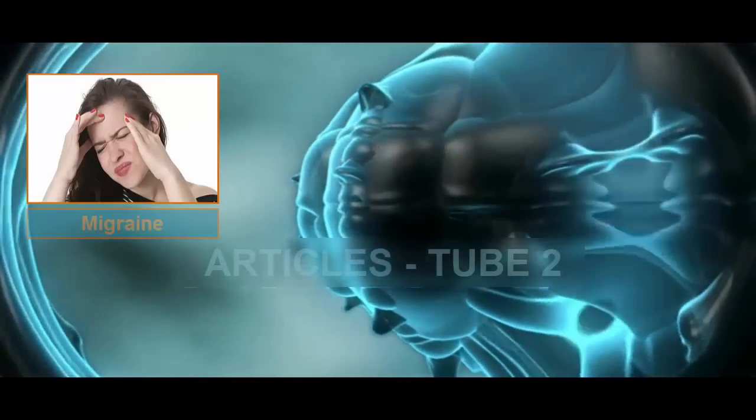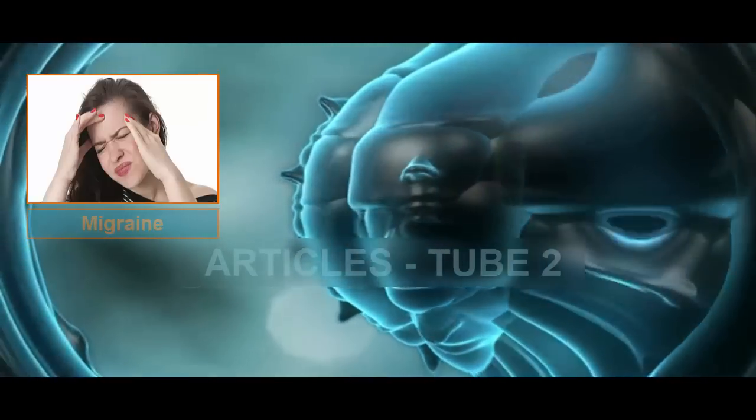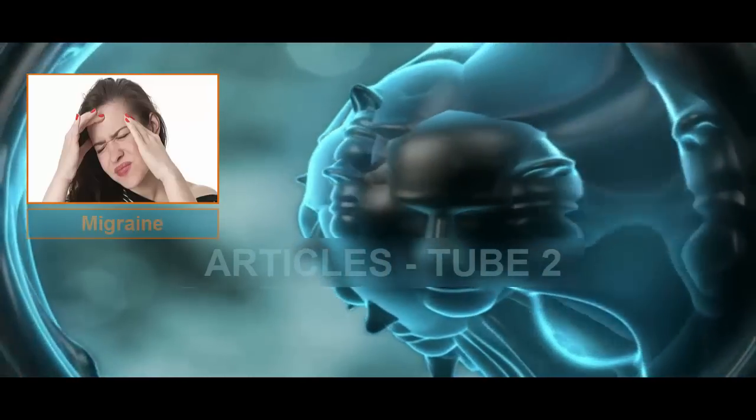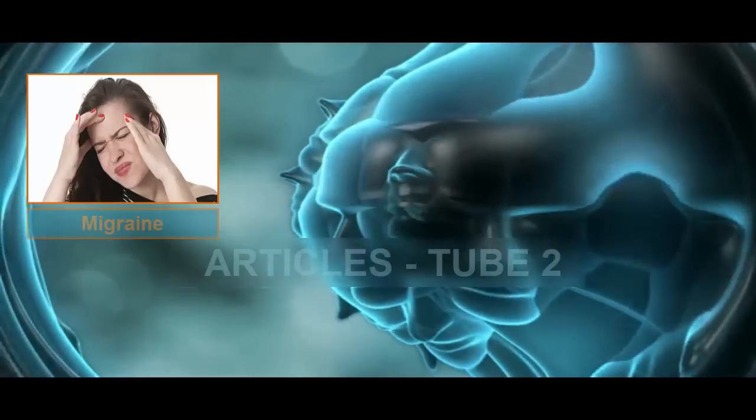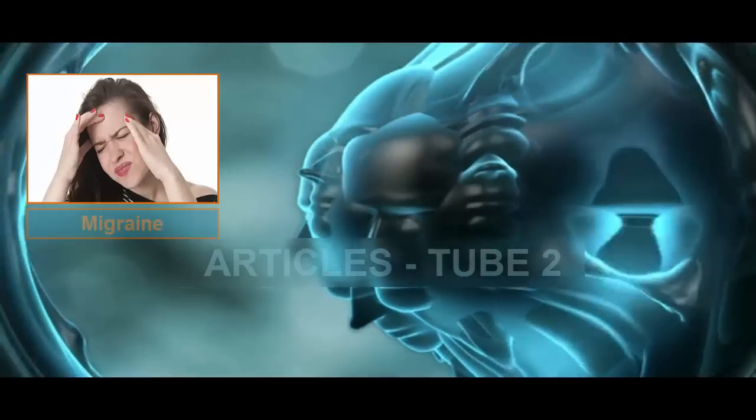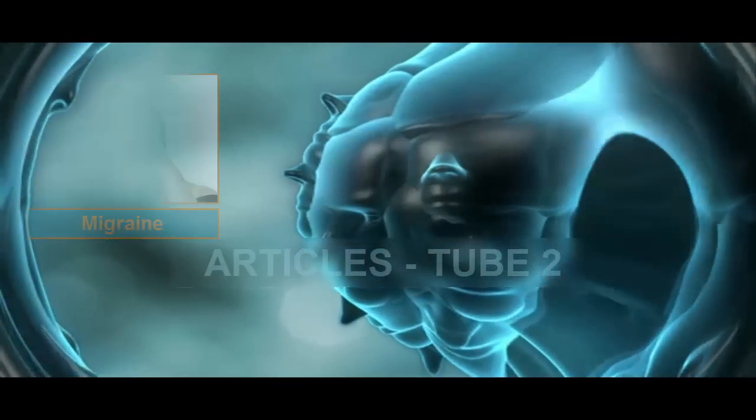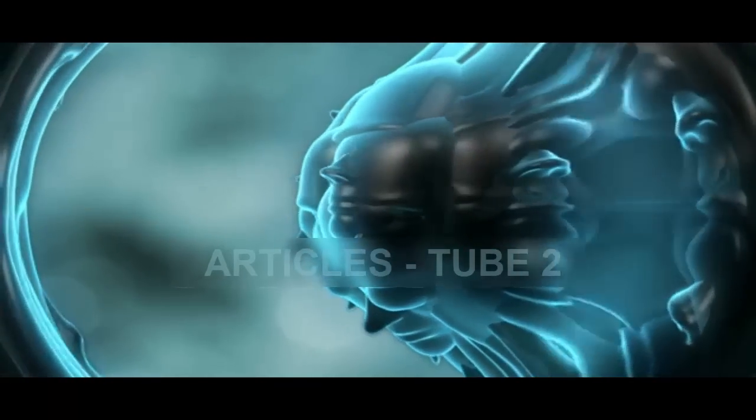A typical migraine attack produces throbbing pain on one side of the head, but it can be bilateral. The word migraine is derived from the Greek word hemicrania, meaning half of the head, because the pain of migraine often occurs on one side. Pain also sometimes spreads to affect the entire head.